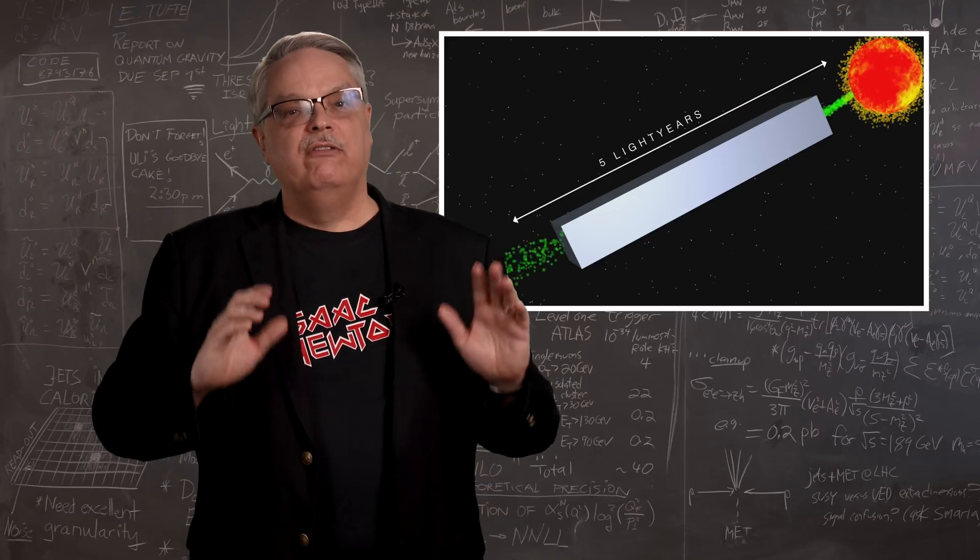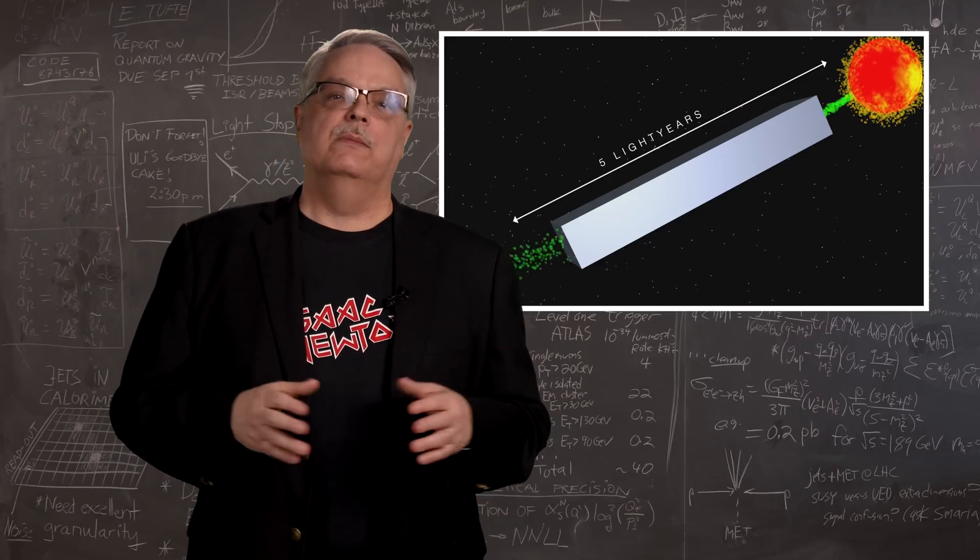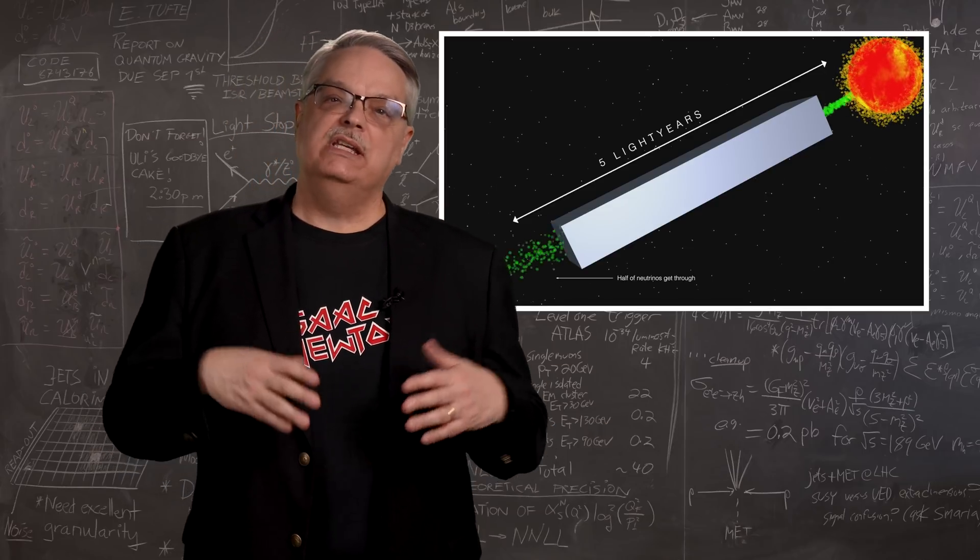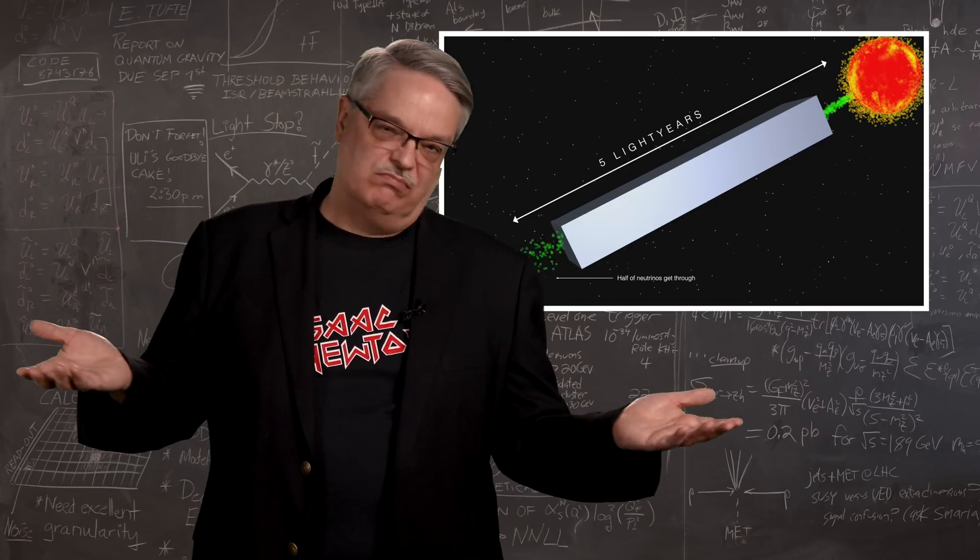Neutrinos pass through matter very easily because they don't interact very much. Matter, electric fields, gravity—neutrinos ignore all of them almost all of the time.